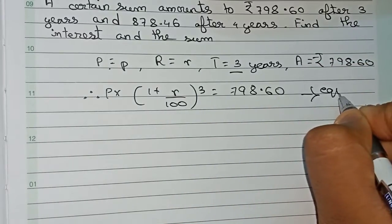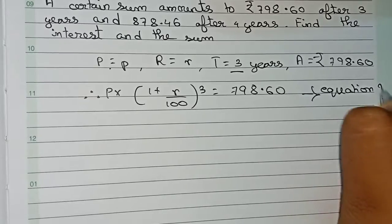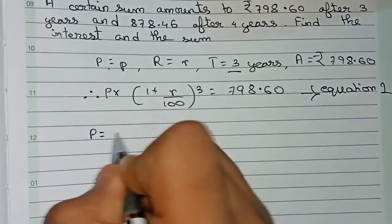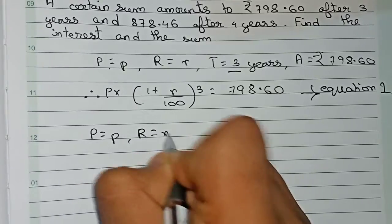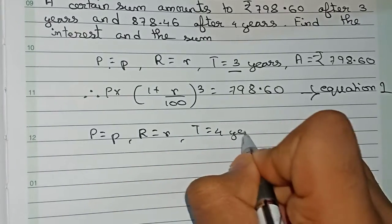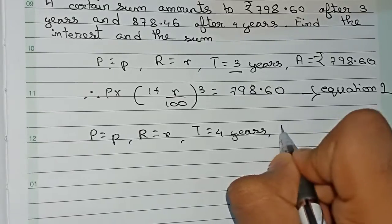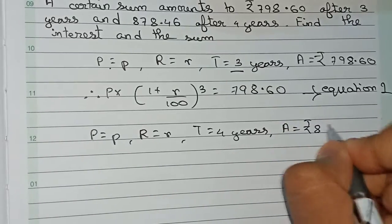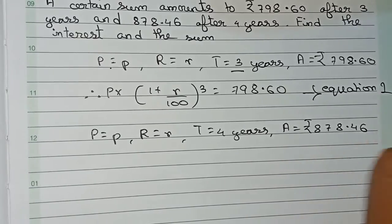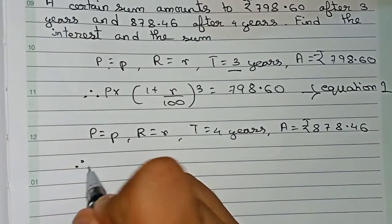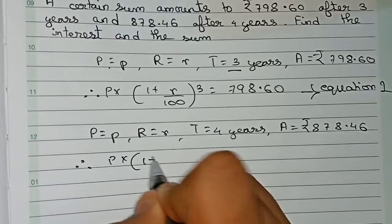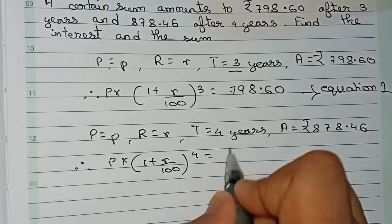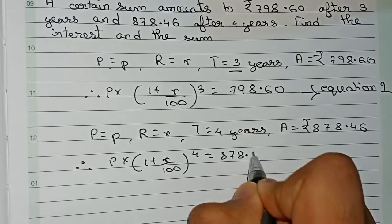So P into (1 + r/100) to the power 3 equals 798.60. This is equation number one. For equation number two, principal is P, rate is r, time is four years, and the amount is rupees 878.46. So P into (1 + r/100) to the power 4 equals 878.46.